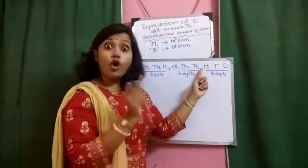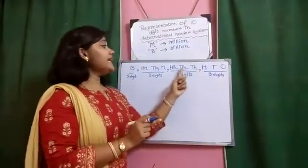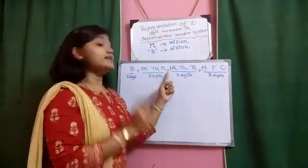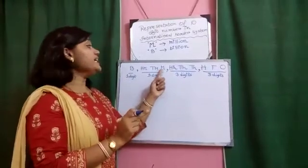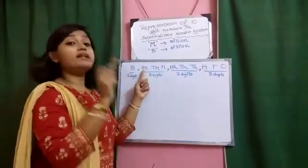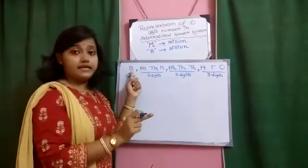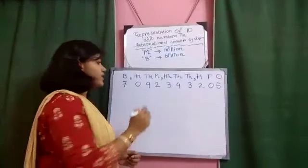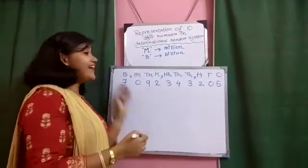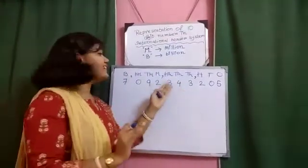So, how to read it out? Once, tens, hundred, comma. Thousand, ten thousand, hundred thousand, comma. Million, ten million, hundred million, comma. Billion. Okay. So, now, header introduction is done.